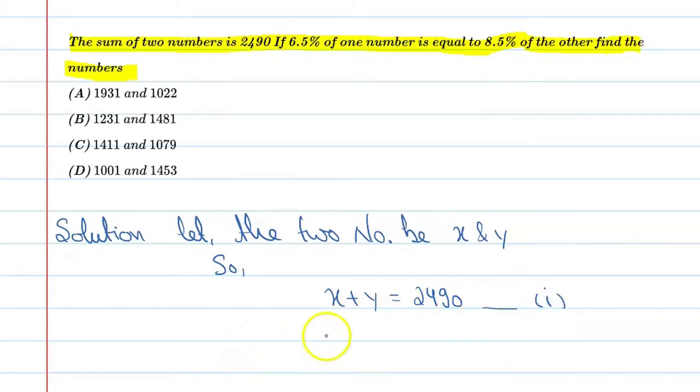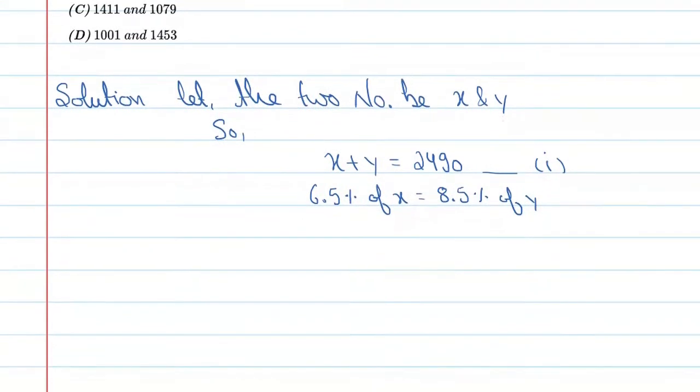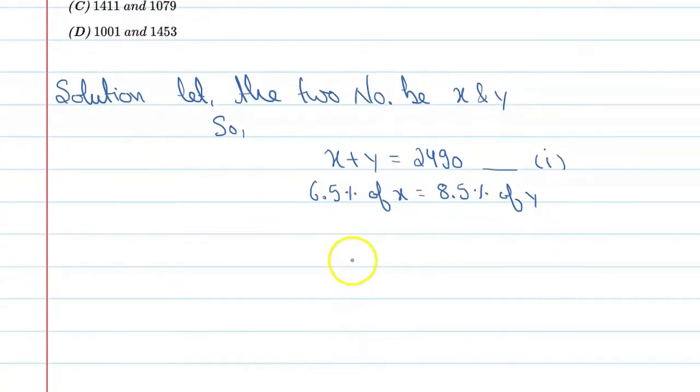And second thing is 6.5% of x is equal to 8.5% of y. So you can say 6.5/100 times x equals 8.5/100 times y, and the 100s will get cancelled.